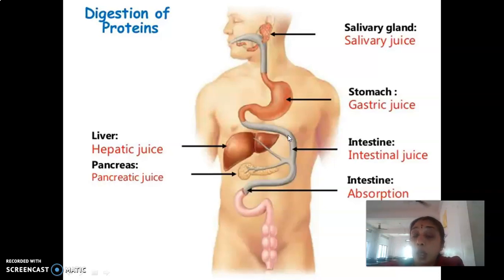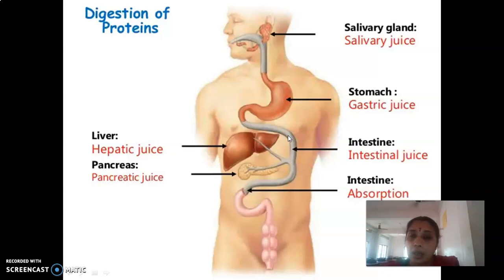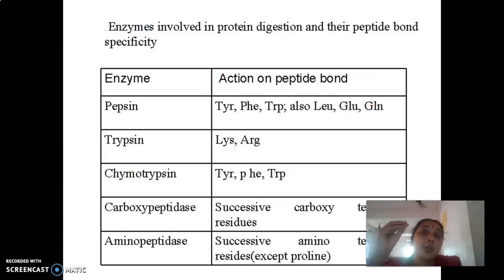Trypsin is a typical example of a serine protease — it has serine residues in its active site. It is an endopeptidase and acts on basic amino acids like lysine and arginine.